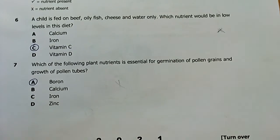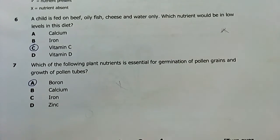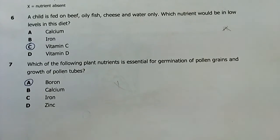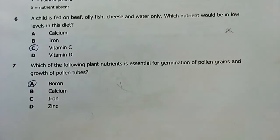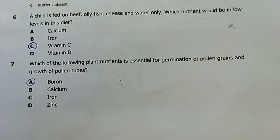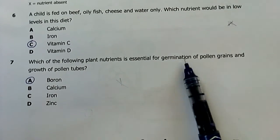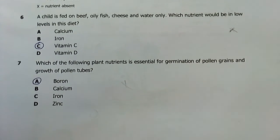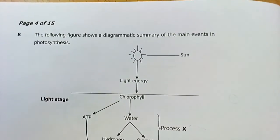Number seven: which of the following plant nutrients is essential for germination of pollen grains and growth of pollen tubes? I didn't see that one coming, but fortunately I knew the answer. It's boron. Boron is essential for germination of pollen grains and growth of pollen tubes.